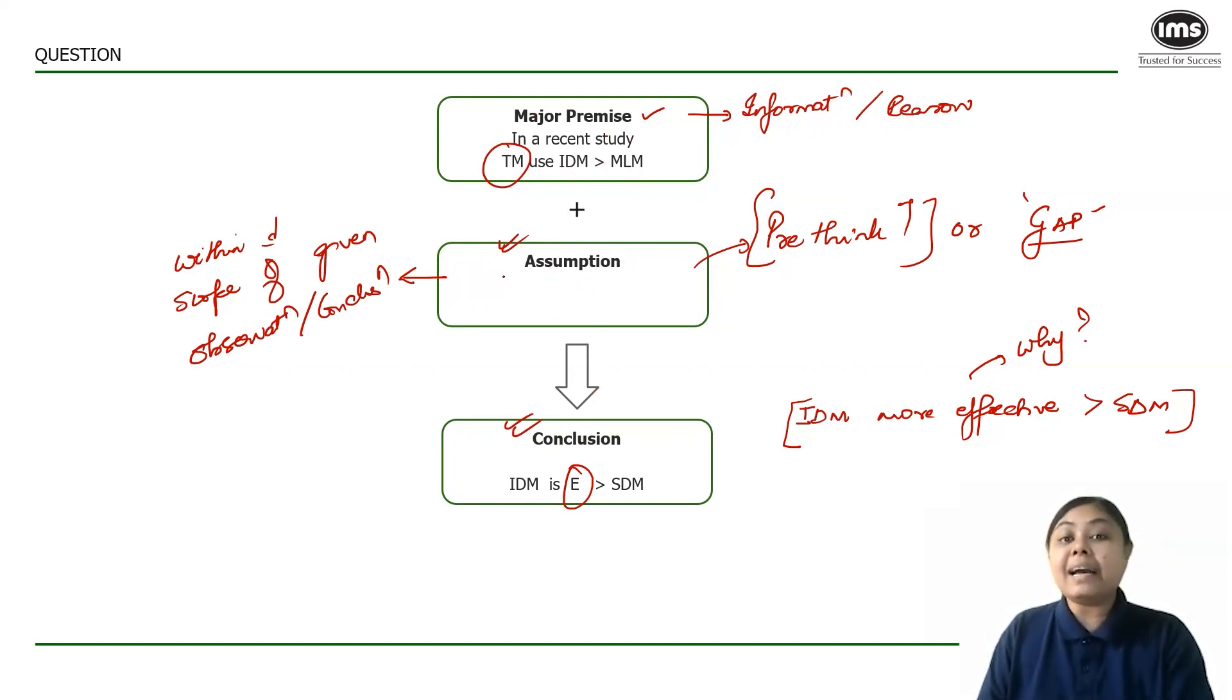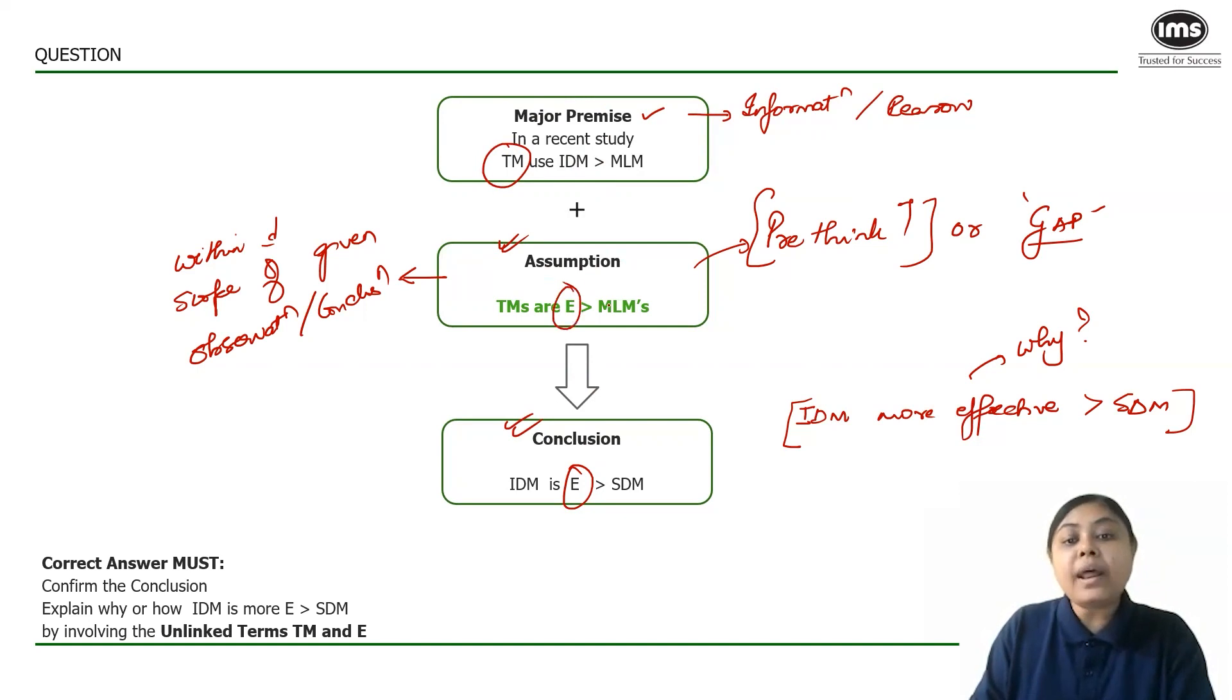What would be the answer components in an assumption? By logic the answer components has to be within the scope of the given observation and my conclusion. I have two unlinked terms. One is suddenly the word effectiveness is coming in my conclusion but I'm not including top managers in the effectiveness, and top managers is in my given premise. So ideally there has to be some relationship between the top managers and the effectiveness. Can I say that TMs are more effective than middle and lower level managers? If I say that will this help confirm the conclusion? The correct answer must confirm the conclusion.